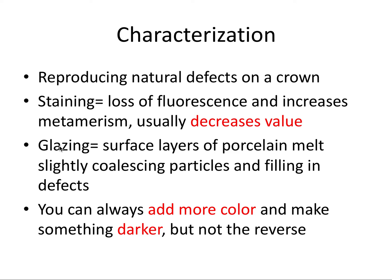We should differentiate staining from glazing. Glazing means that surface layers of the porcelain melt slightly, coalescing particles and filling in defects — so glazing is more about treating the surface texture rather than affecting color. To put it all together: you can always add more color and make something darker, but not the reverse. You can't make things lighter or take away color. So when in doubt, pick a shade with lower saturation and higher value, because we can always go back and add stain to make the crown darker later on.